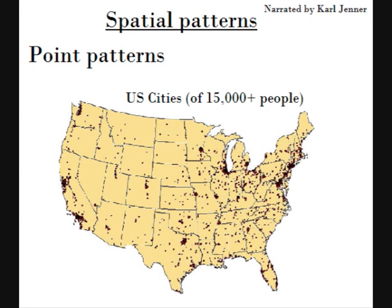First we will look at point patterns. A point pattern is a spatial pattern that is composed of closely arranged points. Each point can represent anything, but in this case a point represents a city of 15,000 people or more. Notice that there are a cluster of smaller cities located around the larger cities, such as San Francisco, Los Angeles, Chicago, Dallas and Washington DC. This is a pattern, and perhaps the main reason is because larger cities draw people to them because of the amenities that they offer, in the form of entertainment, culture, professional opportunities and services. Land and housing prices are more expensive in the larger cities, and only so many people can live there based on the available housing, so suburbs and smaller cities develop around the larger cities.